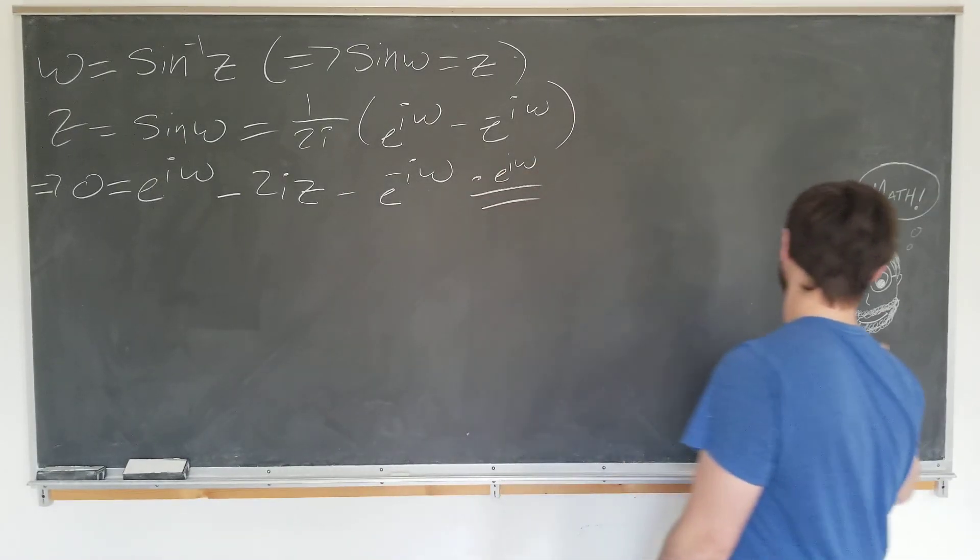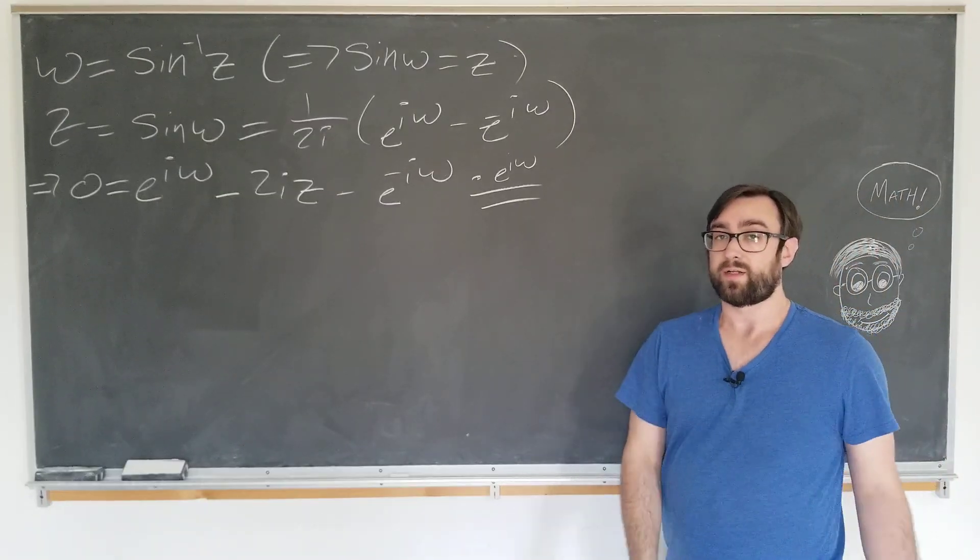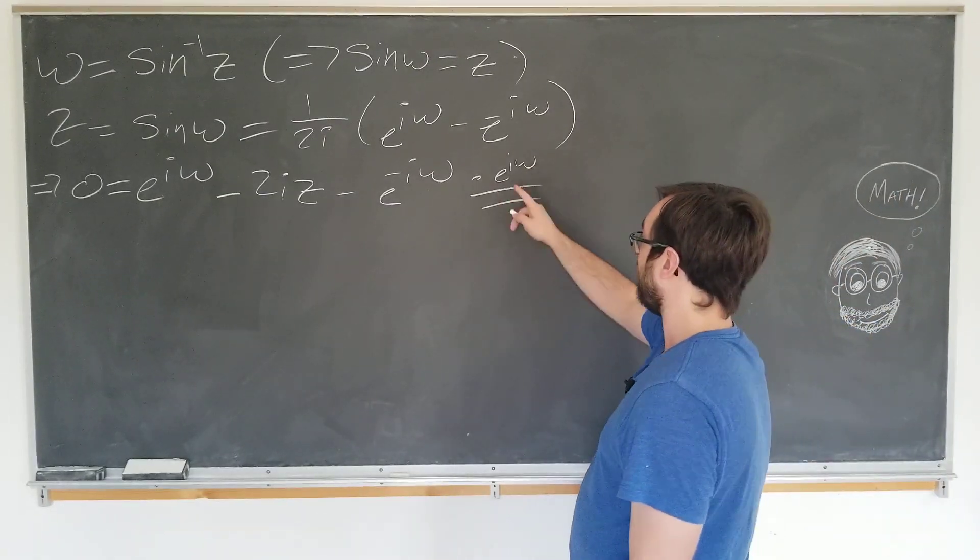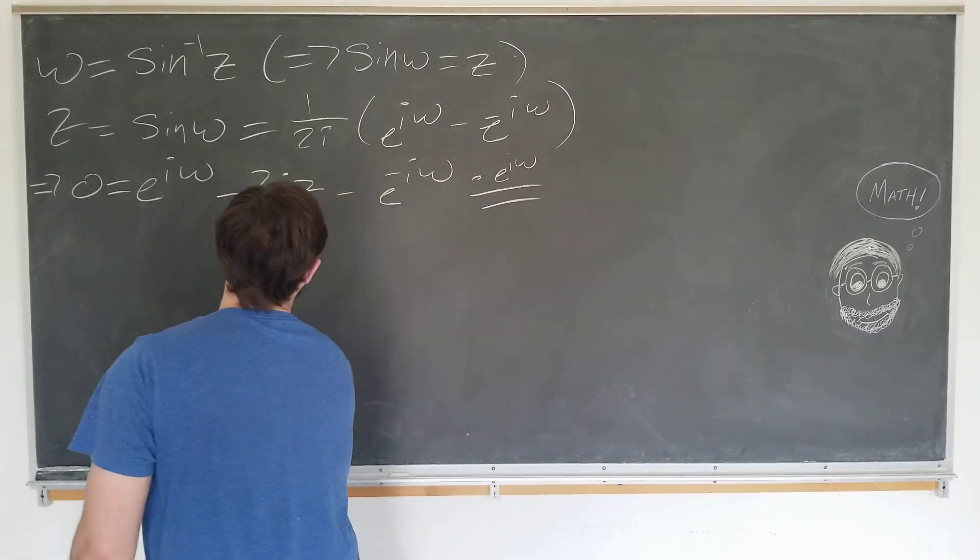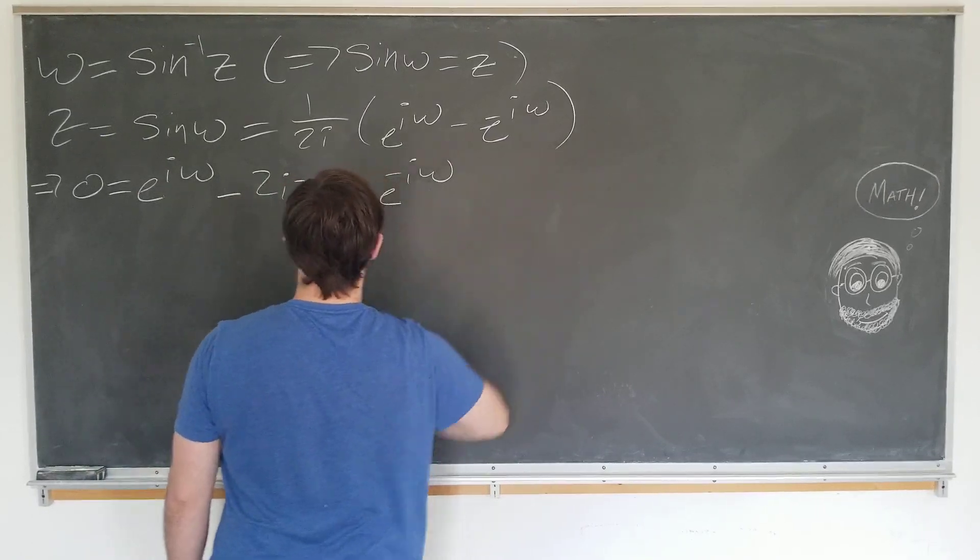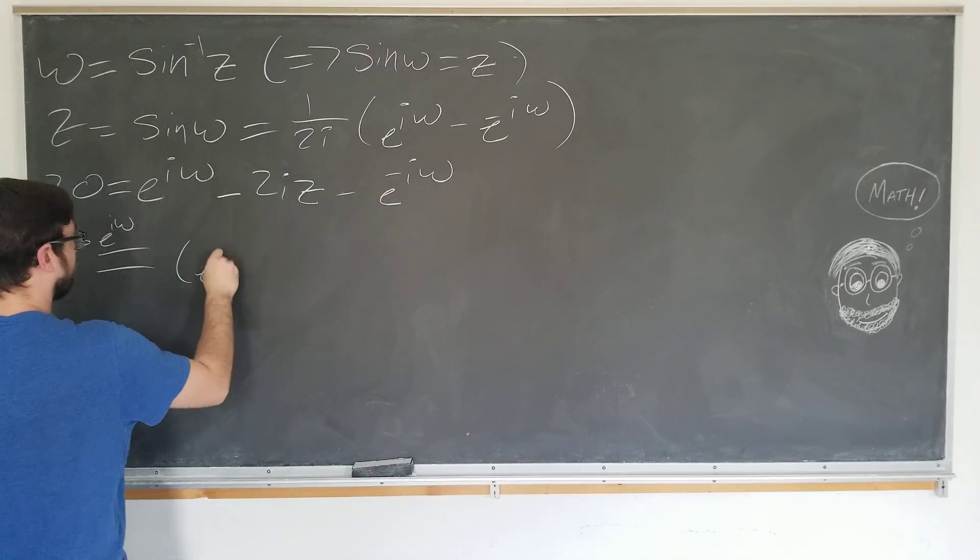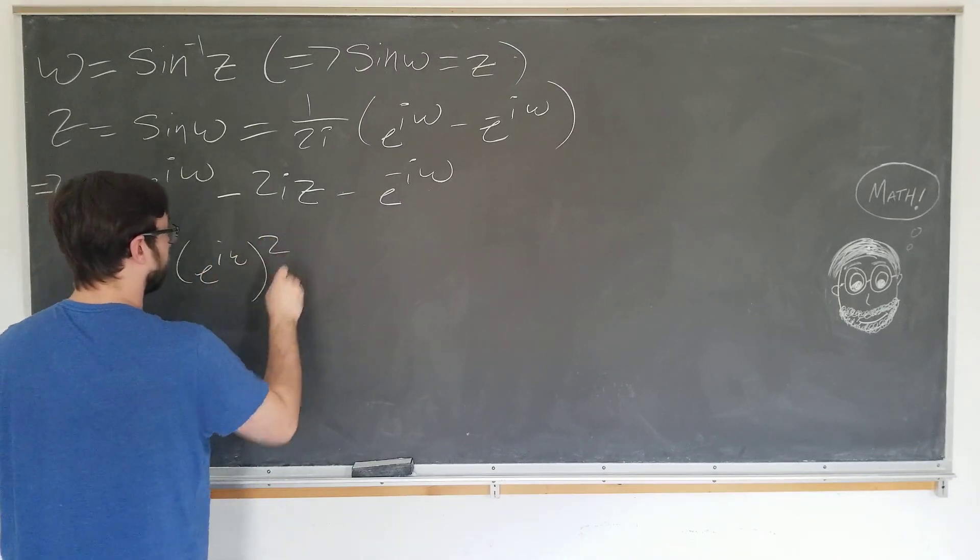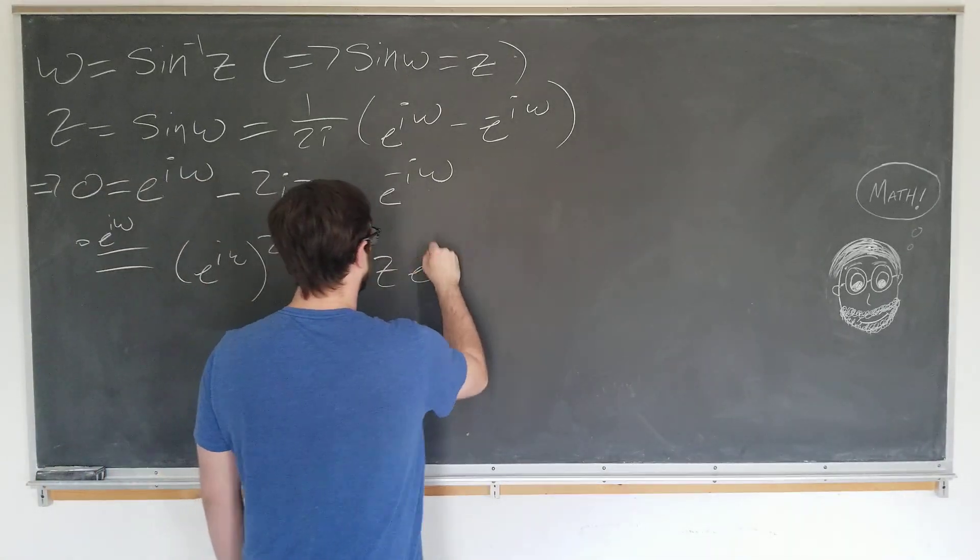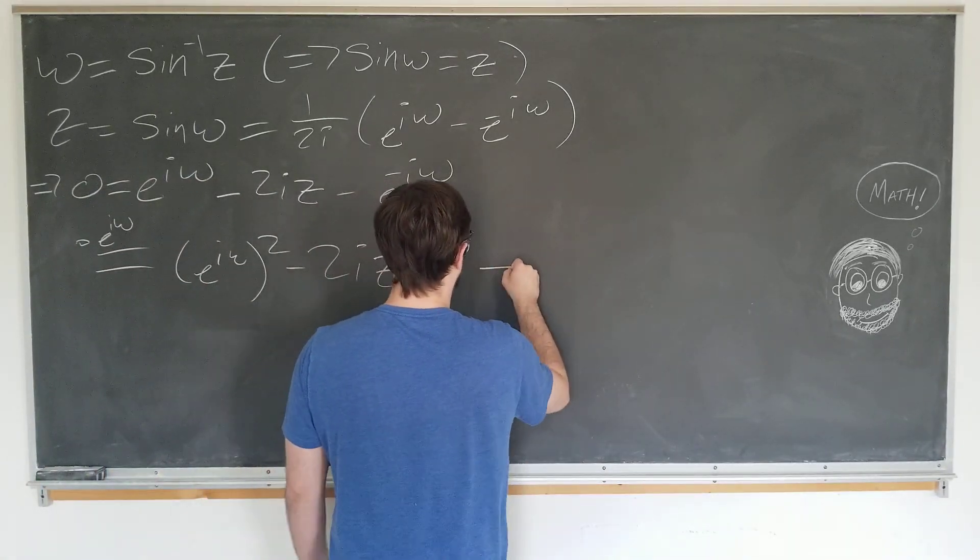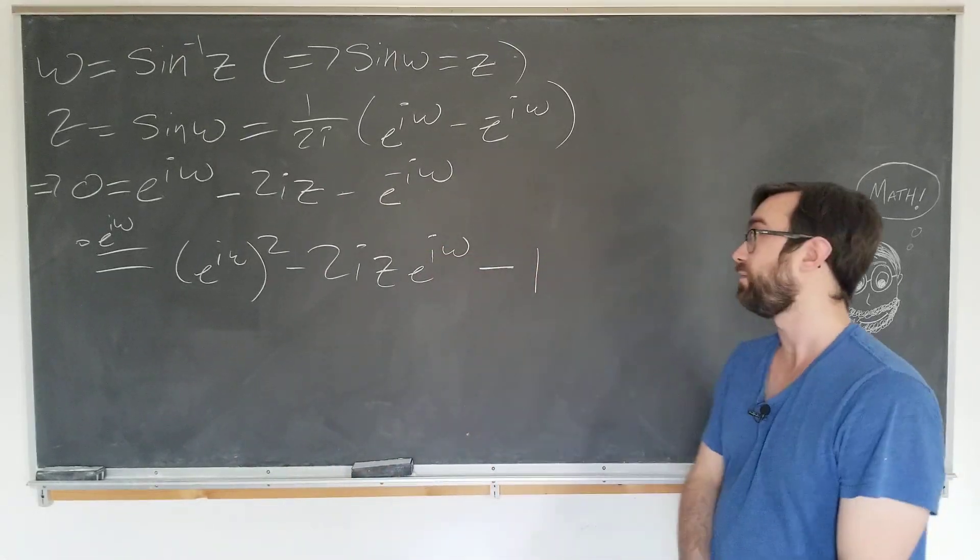Oh incidentally, we still have a friend from last time, courtesy of my wife. She's great at drawing caricatures. So if I multiply by e to the i omega, this time I'm going to keep it in this form. If I do this, I'm going to have e to the i omega squared minus 2i z e to the i omega minus 1, since e to the plus i omega and e to the minus i omega become 1.